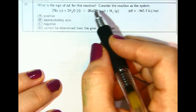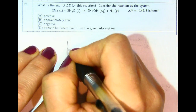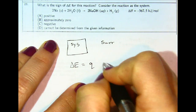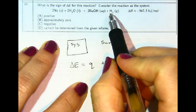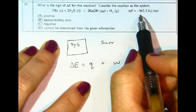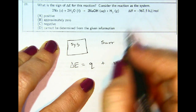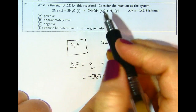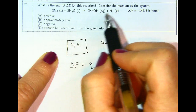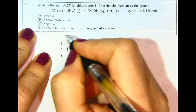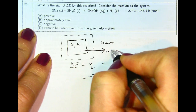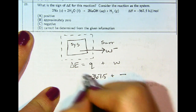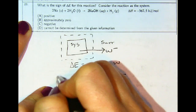Number 23: what is the sign of delta E? Consider the reaction as the system. Delta E equals Q plus W. We're told delta H is negative 367.5, and assuming constant pressure, that is also Q — so Q equals negative 367.5. We go from zero moles of gas to one mole of gas, so the system expanded outward, meaning the system did work on the surroundings — a negative value for W. Negative plus negative means delta E is negative. Letter C is the answer.